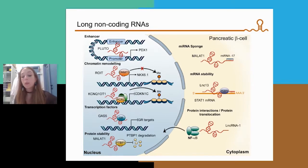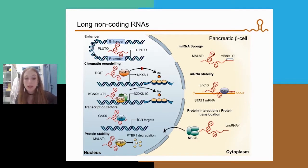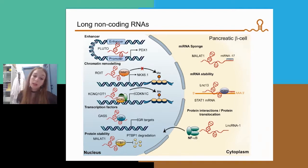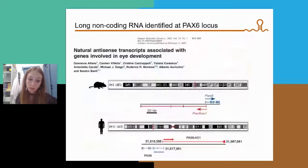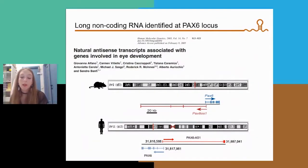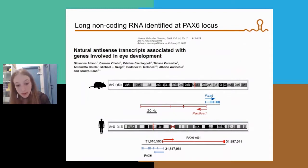Natural antisense transcripts typically regulate the expression of the gene from which they are transcribed, as in the case of Pluto and PDX1. Therefore, we decided to study the function of a long non-coding RNA that overlaps with intron 1 of Pax-6 and is transcribed from the opposite strand.